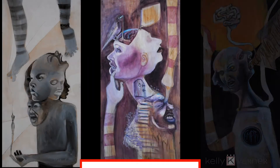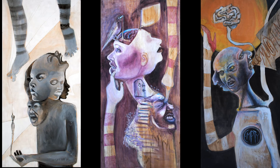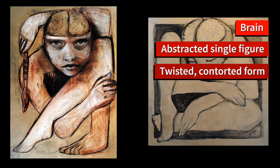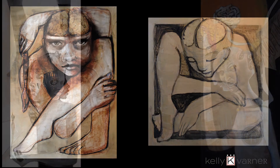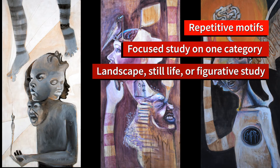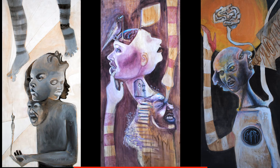A subject series will focus on who or what your artwork is about. This may be a landscape, still life, or portrait. The subject examples seen in these two pieces are the brain, the abstracted single figure, and a twisted, contorted form. Some subject examples you may use in your pieces are repetitive motifs, focused study on one category, a larger study on landscapes, still lifes, or figurative subjects. Try focusing on a broader category, like figure or portraits, instead of a small category, like Beth.